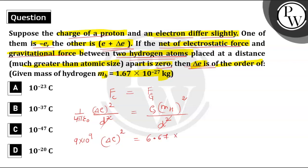6.67 into 10 power minus 11 into mass of hydrogen is 1.67 into 10 power minus 27 whole square. Okay.